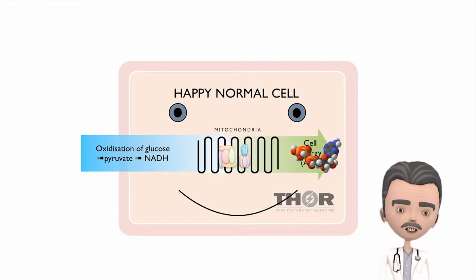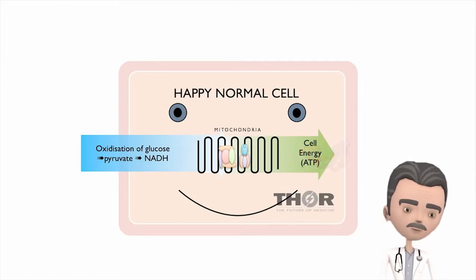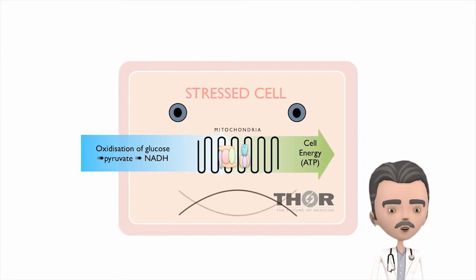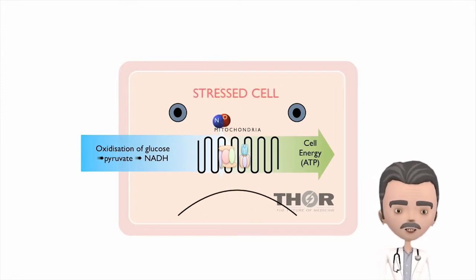But something goes wrong when we get sick, injured, stressed, or just old. The mitochondria starts to make nitric oxide.